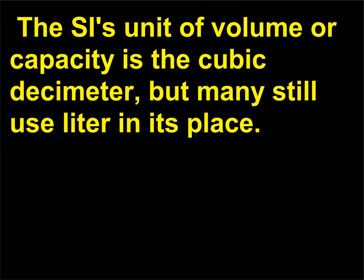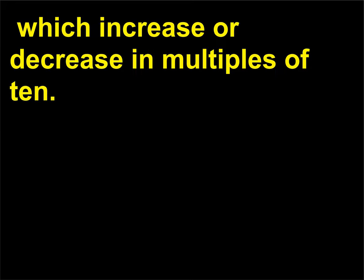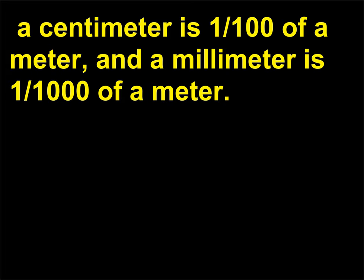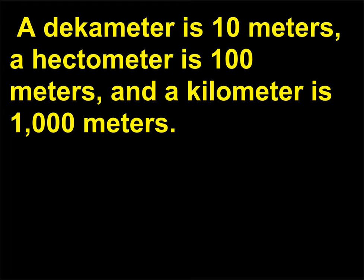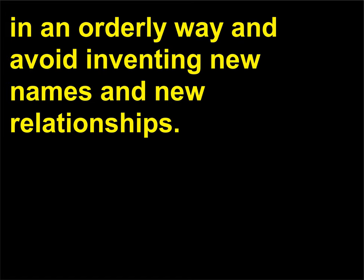The SI unit of volume or capacity is the cubic decimeter, but many still use litre in its place. Very large or very small dimensions are expressed through a series of prefixes which increase or decrease in multiples of 10. For example, a decimeter is 1/10 of a meter, a centimeter is 1/100 of a meter, and a millimeter is 1/1000 of a meter. A decameter is 10 meters, a hectometer is 100 meters, and a kilometer is 1000 meters. The use of these prefixes enables the system to express units in an orderly way and avoid inventing new names and new relationships.